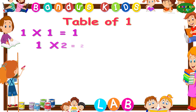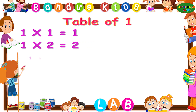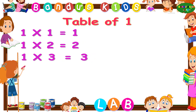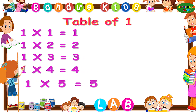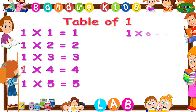One twos are two. One threes are three. One fours are four. One fives are five. One sixes are six.